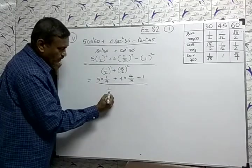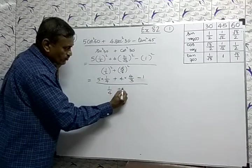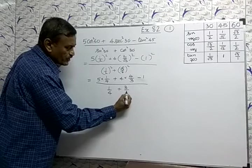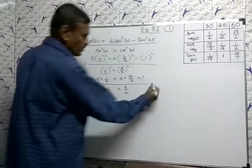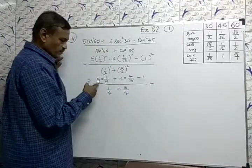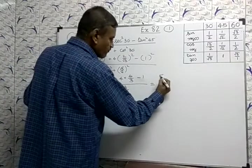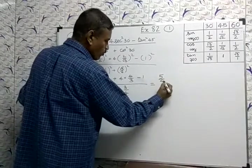1 square and 2 square, you know, so root 3 square is 3 and 2 square equal to 4. 4 square equal to 4, 5 square equal to 4 by 4.